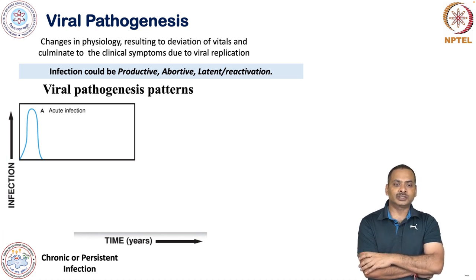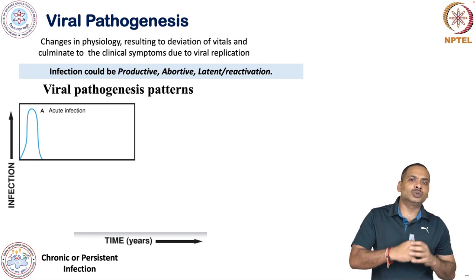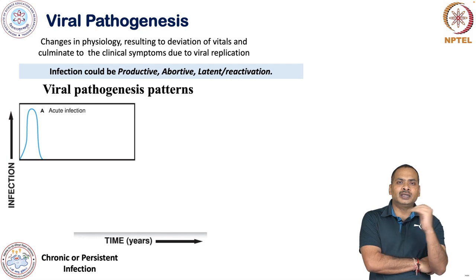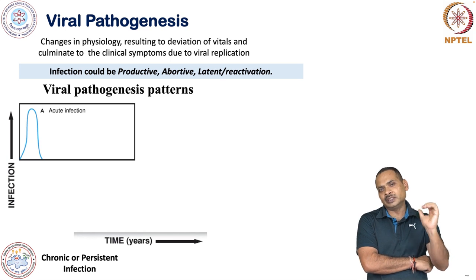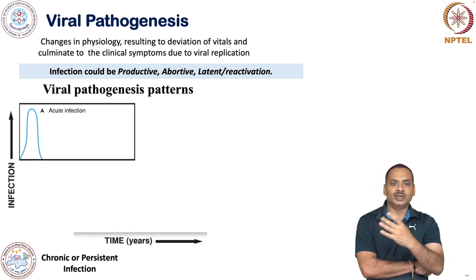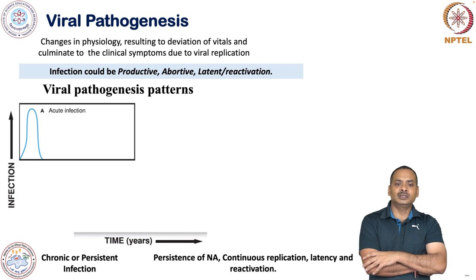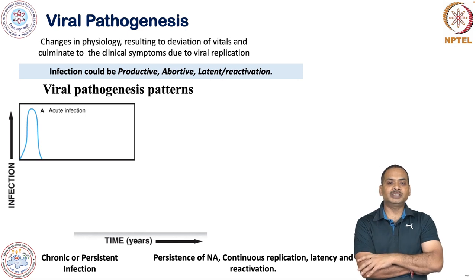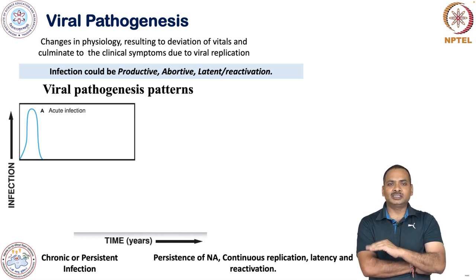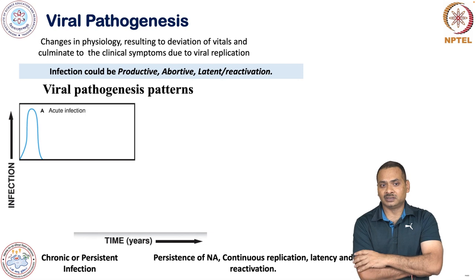There is also chronic or persistent infection. Here the host immune system has also learned how to control the virus to some extent. The virus will be in the cell but not so much that it will drastically affect the vitals. There will be persistence of nucleic acid, continuous replication, sometimes latency, sometimes reactivation, and episodes of change in vitals.